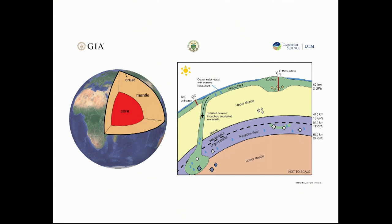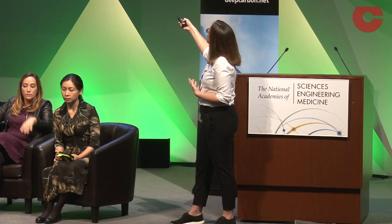The diamonds that Evan spoke about yesterday — the super-large diamonds — we now know come from much deeper, from the transition zone or the lower mantle. So while diamonds can tell us a lot about very deep Earth processes, the diamonds I'm focusing on today are from the lithospheric keel, and they can inform us about how continents maintained their long-term stability because they're forming in these cratonic roots.